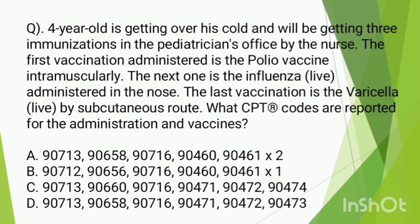Now we have the administration code to determine the method. Option A uses administration codes 90460 and 90461. Code 90460 is a specific code description. We will eliminate option A. Option B is also 90460 and 90461, so we eliminate option B. Option C administration uses 90471 and 90472.